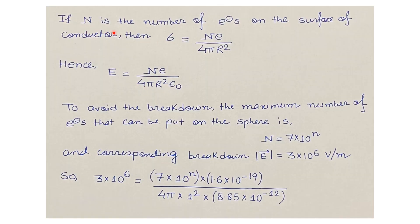If N is the number of electrons on the surface of the conductor, then σ is given by N times e divided by 4πR², which is the surface area of the conducting sphere. Hence the electric field on the surface is E = Ne / (4πR² ε₀).